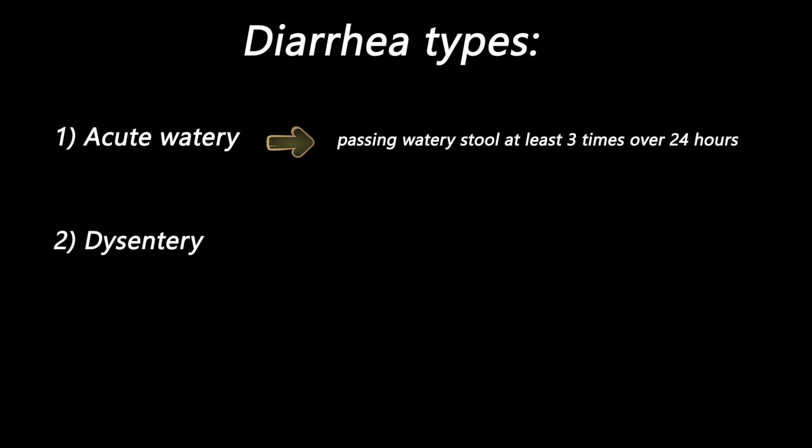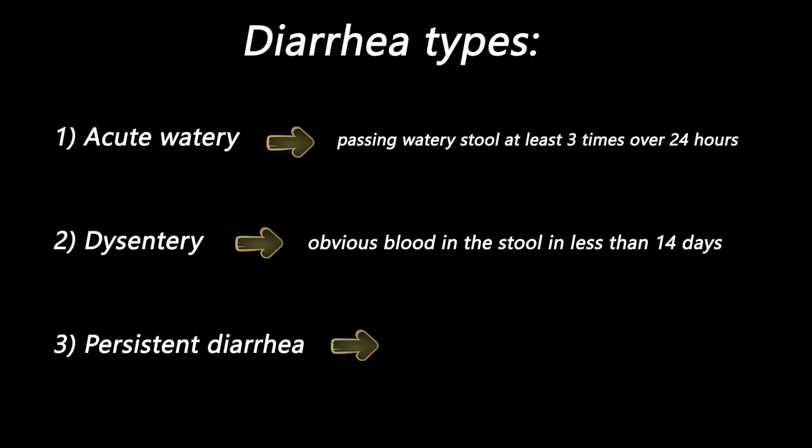Second, dysentery or invasive diarrhea means when a patient has obvious blood in the stool that has started in less than 14 days. And the last type is persistent diarrhea, which means looser bloody stool that lasts more than 14 days.